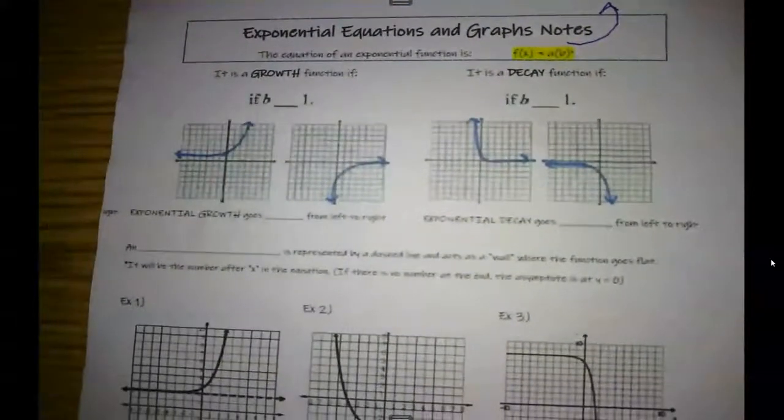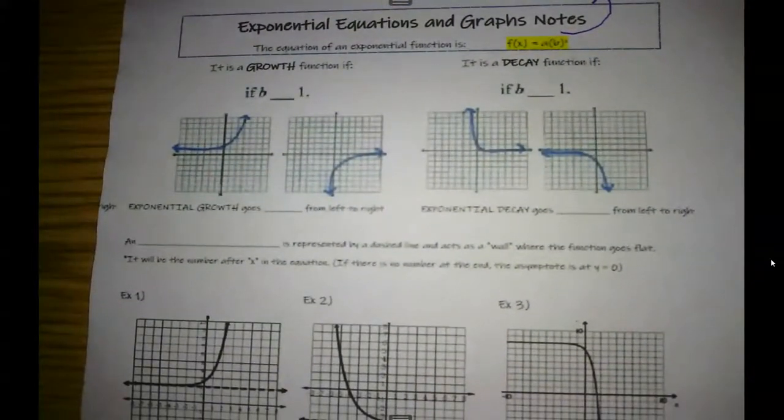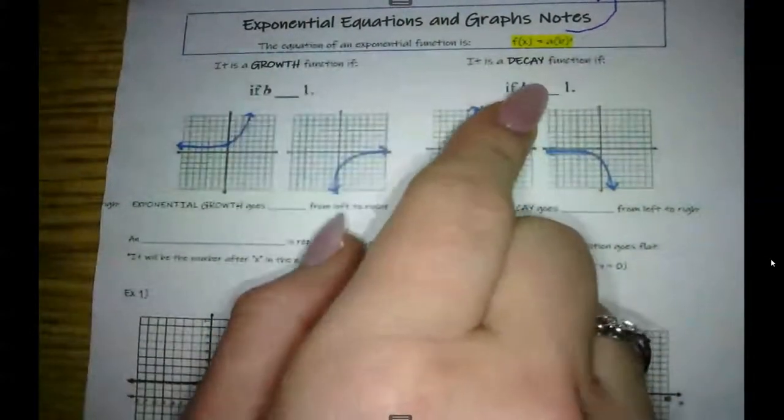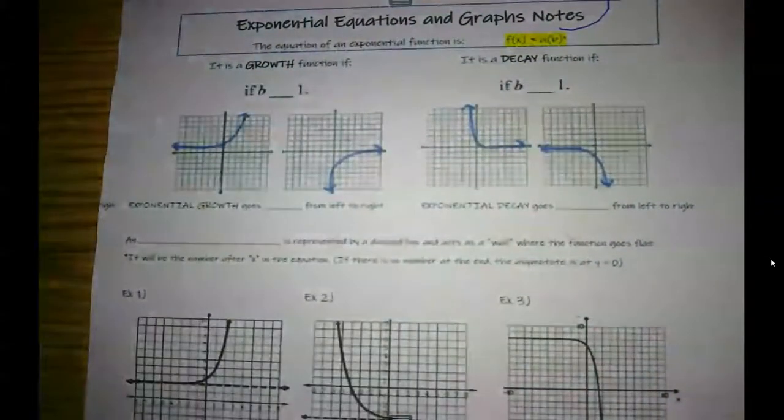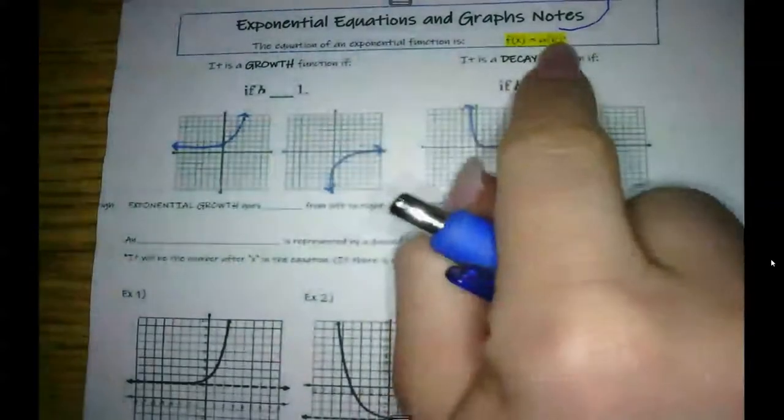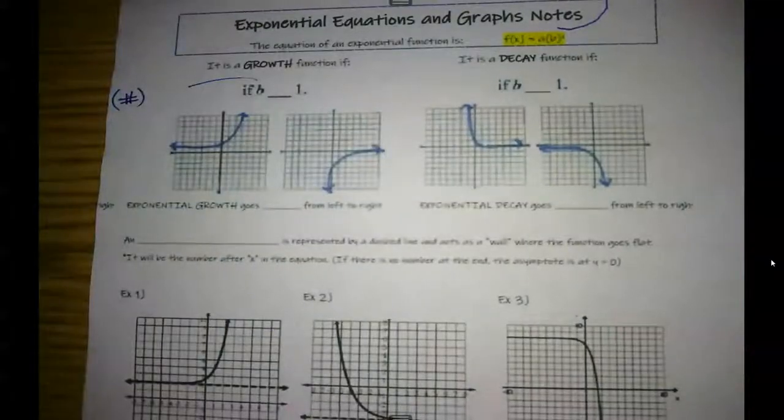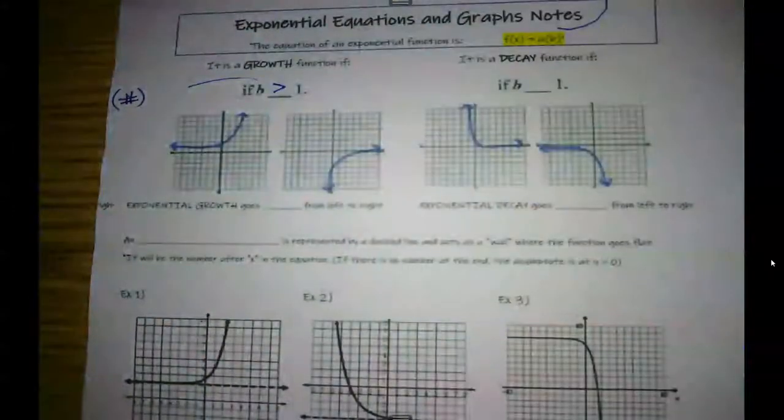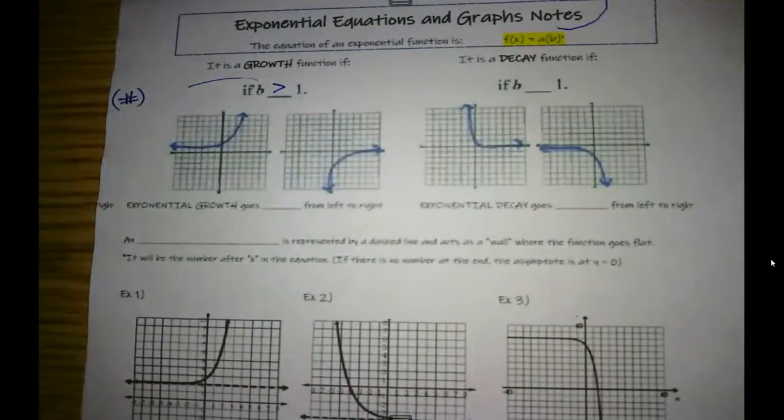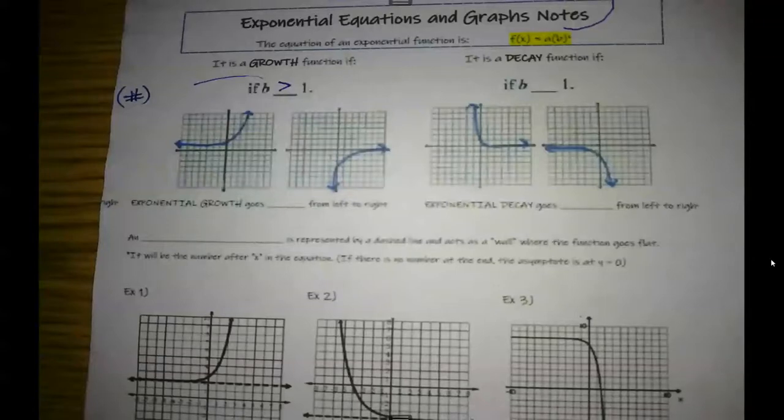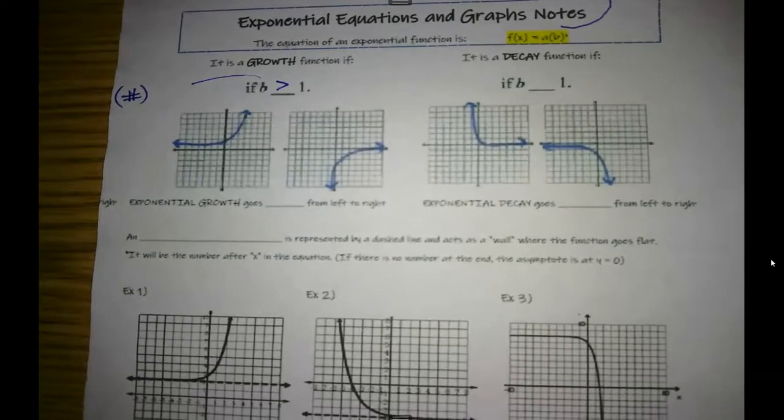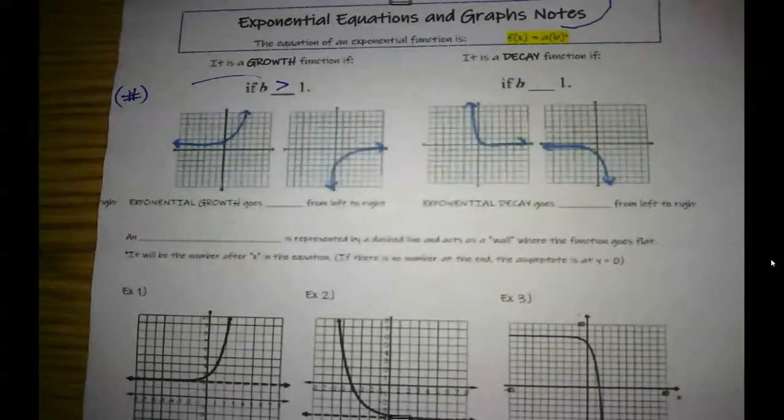So again, we have two different exponential equations. We've got a growth function and a decay function. And our growth function is going to be if this b, the number in the parentheses, if it is greater than one, then it's going to be a growth function. That means that our word problem, whatever we're looking at, said increased. Something got bigger.